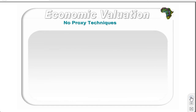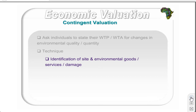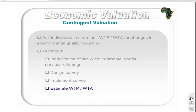The no-proxy techniques are also known as stated preference techniques. Two techniques are discussed: contingent valuation and conjoint analysis, which are based on the introduction of a hypothetical market. These are the only methods able to elicit non-use values of the environment. The contingent valuation method asks individuals to state their willingness to pay or willingness to accept for changes in environmental quality or quantity given a hypothetical scenario. The technique involves identifying the site and the environmental goods, services, or damage to be valued; designing and testing the survey; implementing it; analyzing the data to estimate individual willingness to pay or accept; and then aggregating the willingness to pay or accept.